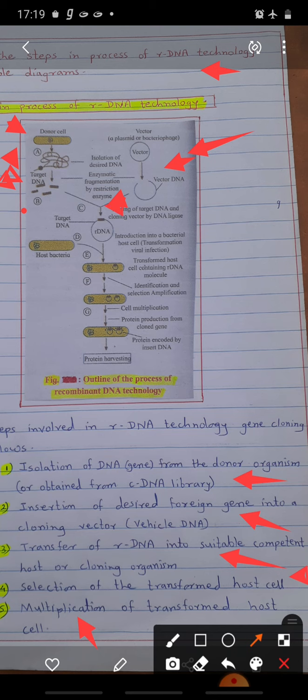Third step is transfer of rDNA into suitable host or cloning organism. rDNA is introduced into host cells. These host cells are mostly bacteria. rDNA can be transferred with the help of the process of transformation. The transfer of rDNA into bacterial cells uses calcium ions.